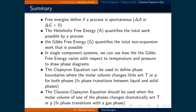Here is a summary of this lecture. Free energies define if a process is spontaneous using only the thermodynamic properties of the system; a process is spontaneous if the free energy change is less than zero. The Helmholtz free energy A quantifies the total work possible by a process, while the Gibbs free energy G quantifies the total non-expansion work possible. In single component systems, we can use how the Gibbs free energy varies with temperature and pressure to draw phase diagrams. The Clapeyron equation defines phase boundaries where molar volume changes little, while the Clausius-Clapeyron equation is used when molar volume changes dramatically, such as across a gas-liquid or gas-solid phase boundary.